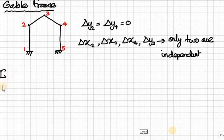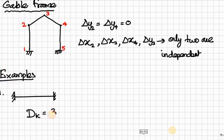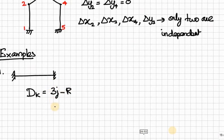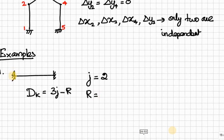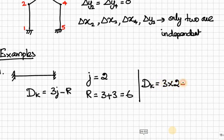Example 1 — Fixed beam (2D rigid): DK = 3J − R. Number of joints J = 2, and restrictions R = 3 + 3 = 6 (both ends fully fixed). Therefore DK = 3(2) − 6 = 0. The beam is kinematically determinate — it cannot move.